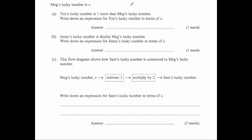And our last example. Here we've got, it says Meg's lucky number is x. Tim's lucky number is one more than hers. Well if hers was 6 his would be 7, if hers was 9 his would be 10. So we're going to add 1 to get his lucky number. So write down the expression for Tim's lucky number, that's going to be x plus 1.